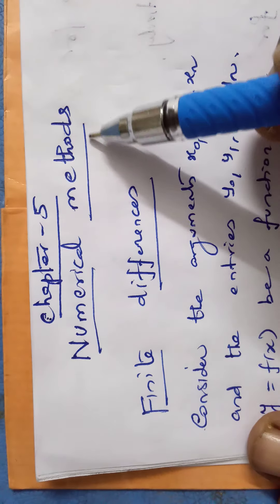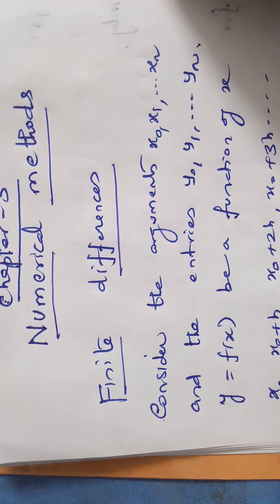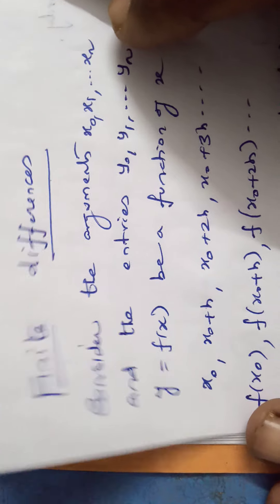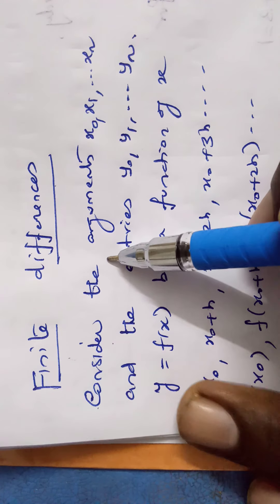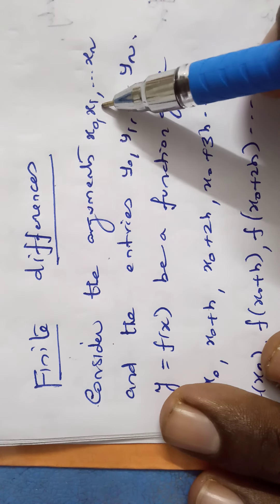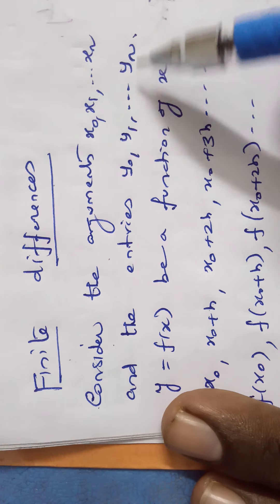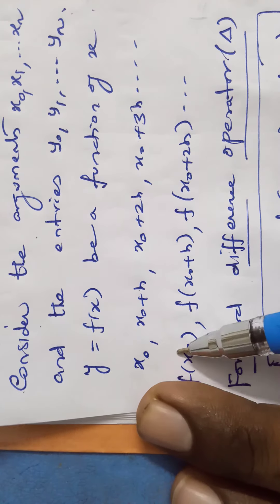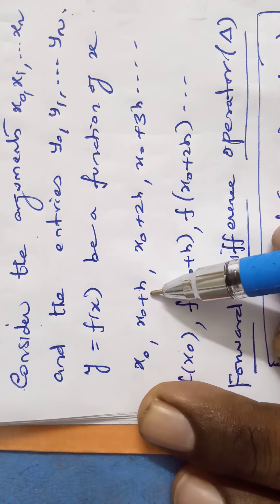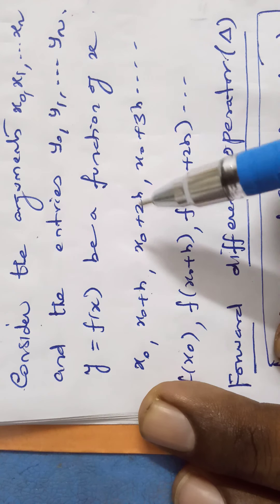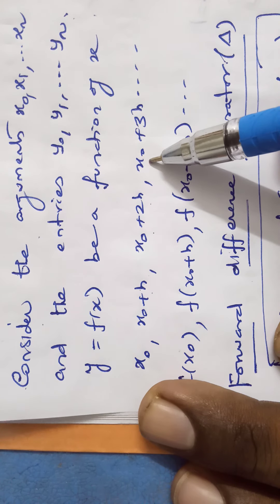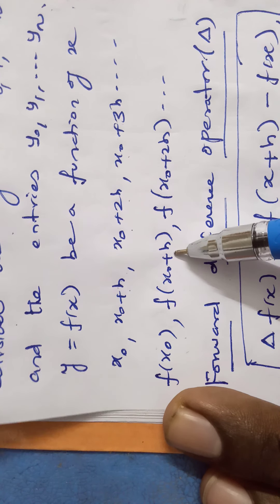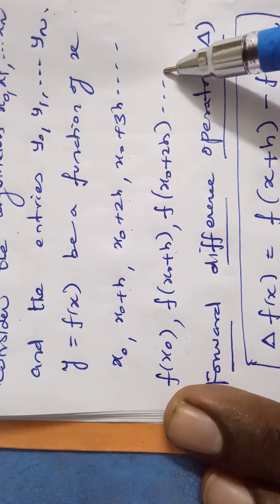Chapter 5: Numerical Methods. In numerical methods, we first concentrate on finite differences. Consider the arguments x₀, x₁, ..., xₙ and the entries y₀, y₁, ..., yₙ where y = f(x) is a function of x. This can be written as x₀, x₀ + h, x₀ + 2h, x₀ + 3h, and so on. This is known as finite differences.